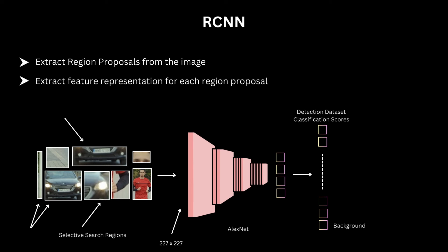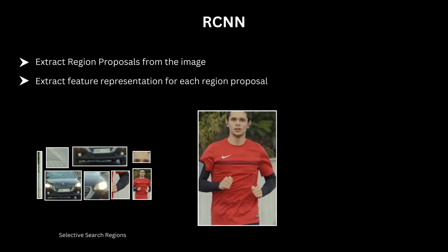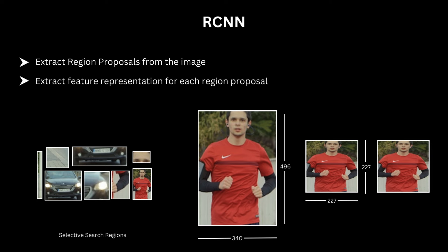The authors do a simple resize transformation for the shape problem with some additional details. Given these proposals, we can convert them to our desired size. The authors also dilate the box prior to resizing so that the transformed box has exactly p pixels of context — in implementation, p=16 pixels is used. For cases where this additional context is not present, like if the box is already at the extreme boundary, they use a padding of mean image pixels instead.